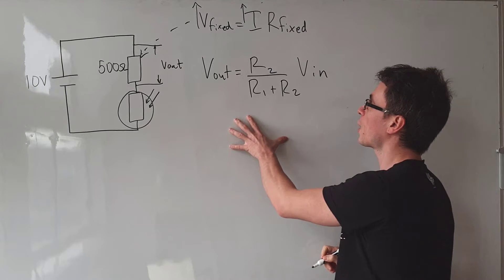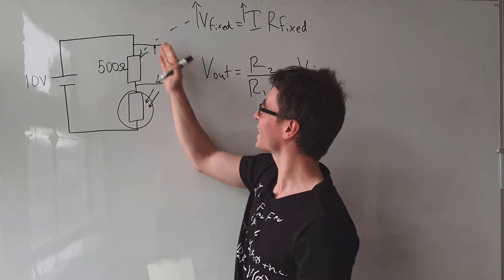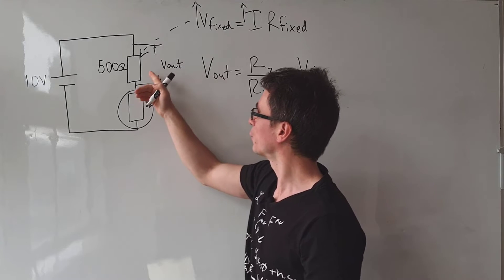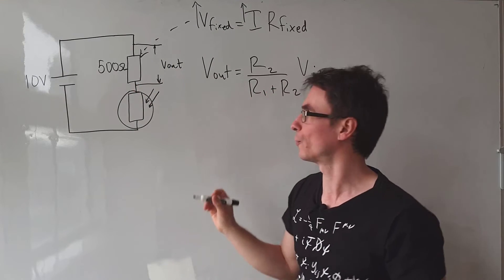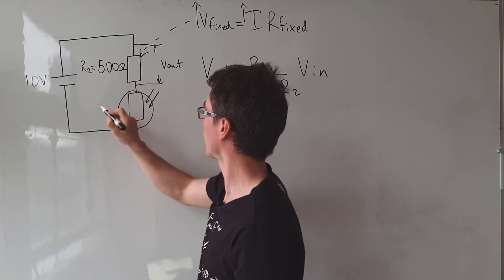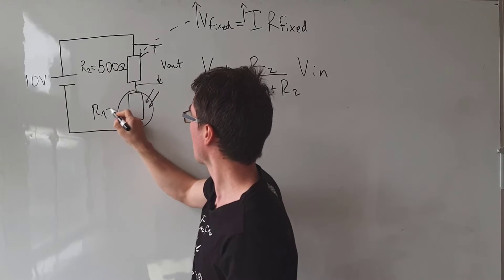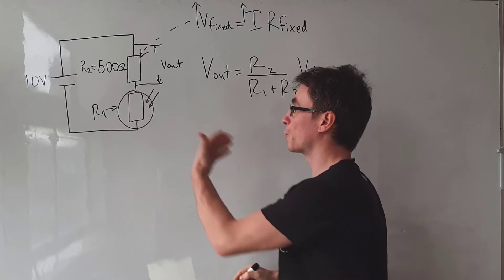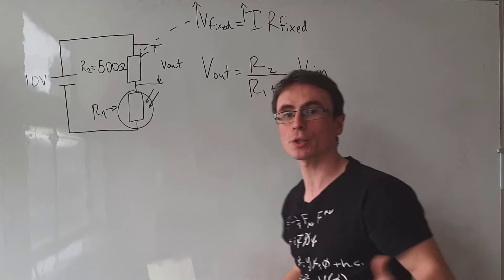In the potential divider formula, R2 is always the value of the resistor where your output voltage is. In this case, R2 will be 500 ohms and R1 will be the resistance of the LDR, which is given in the question.